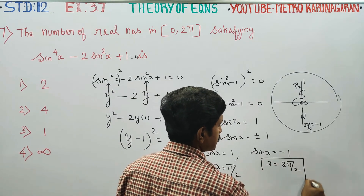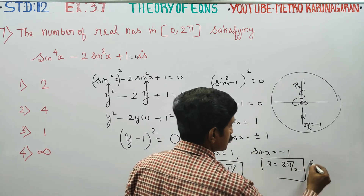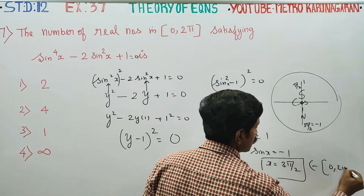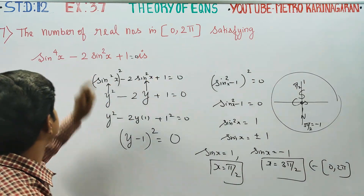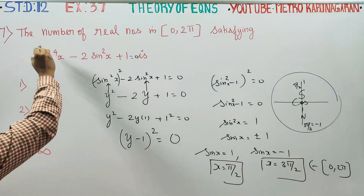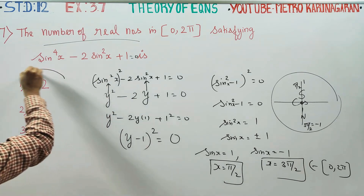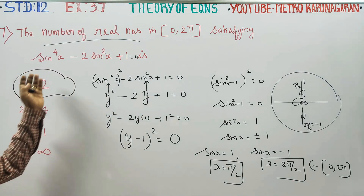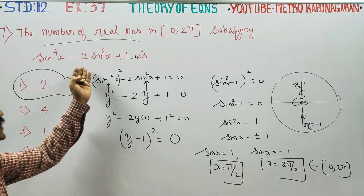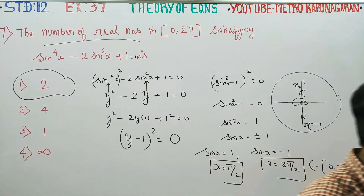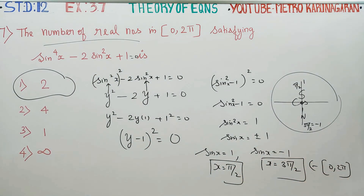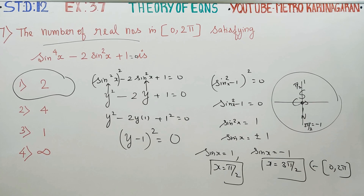There are 2 answers in [0, 2π]. The number of real roots satisfying sin⁴x - 2sin²x + 1 = 0 is 2. The roots are x = π/2 and x = 3π/2. Thank you.